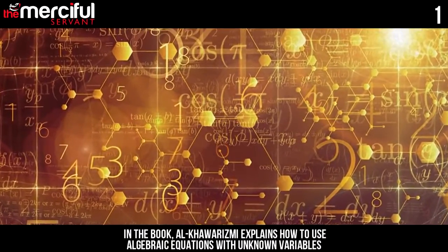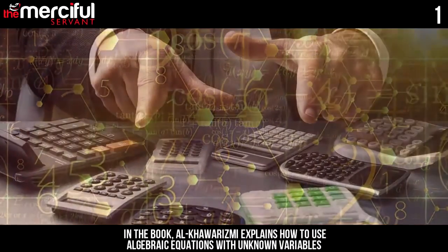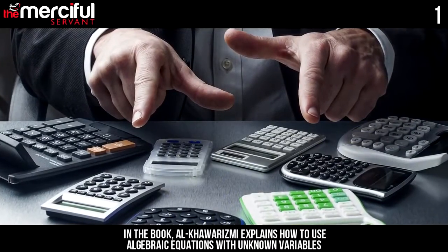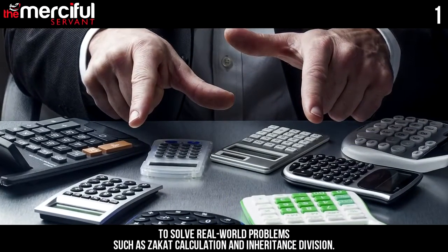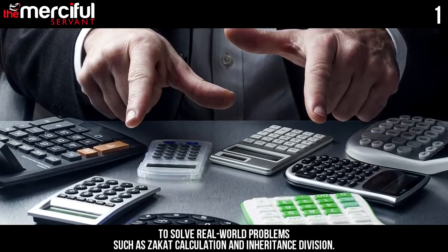In the book, al-Khawarizmi explains how to use algebraic equations with unknown variables to solve real-world problems such as zakat calculation and inheritance division.